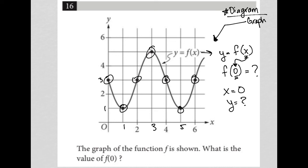When x is 0, we're here. We go up on the y-axis until it hits the graph, which is right there. So we know that when x is 0, y is equal to 3. Therefore, our answer is 3.